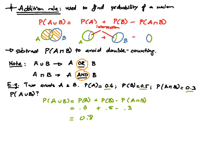The interpretation of this result is that the probability that either A or B happens is 0.8 — remember, the union means 'or.' In this video we talked about the formula for the addition rule, explained why we subtract the intersection, and did a quick example. In the next video we will look at more complicated examples.